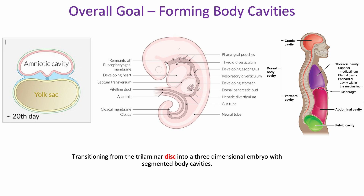Starting off, we need to think about the overall goal of this process. We're trying to go from a trilaminar disc where we have our different cell layers — our endoderm, our mesoderm, and our ectoderm. We can see the neural tube starting to form along with the notochord, inducing that process to start to resemble something more human-like. So we start to have different cavities forming, a head fold, a tail fold, and eventually we're going to get into adult structures. It's easier to think about adult structures and work our way there, since that's a definitive known from anatomy.